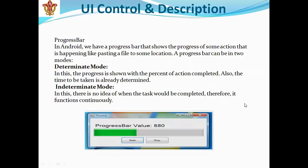In the next slide, we will see bars. A bar is a block in the form of a rectangle — like a horizontal rectangle. By definition, a progress bar in Android shows the progress of some action that is happening, like pasting a file to some location. A progress bar can be in two modes: determinate mode or indeterminate mode.